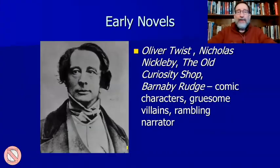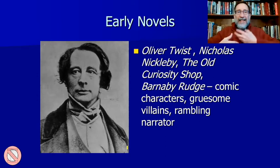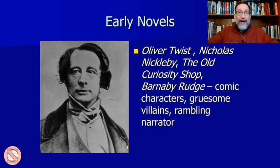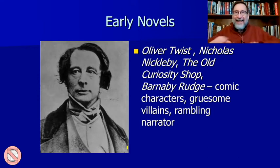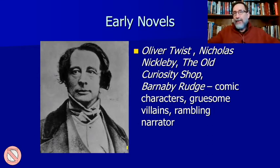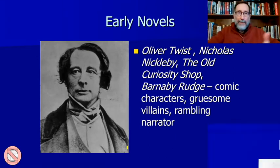As he becomes more successful he moves to a nice countryside estate called Devonshire House in 1840. By now he would have been living like upper middle class — house servants, people making appointments, always properly dressed. But this still wasn't the house he had his eye on. He was doing very well until his sister-in-law Mary dies, and he goes into a deep state of depression. It's after this that his darker novels start to come forward — novels where everything doesn't always work out great. His books also become more political. Later in life, the comedic nature of his books falls by the wayside, which is not uncommon for authors — they tend to grow darker as they get older.